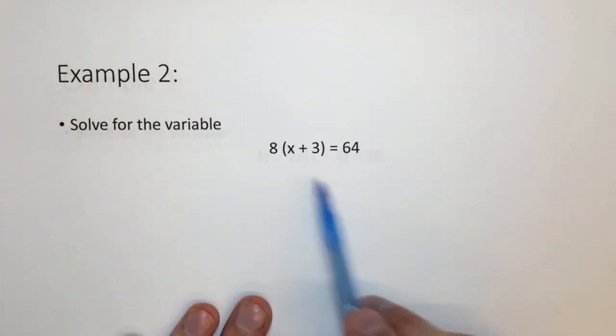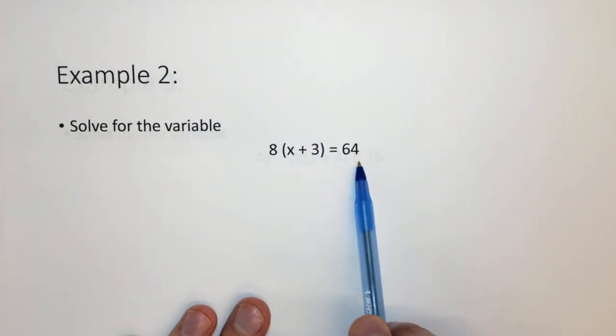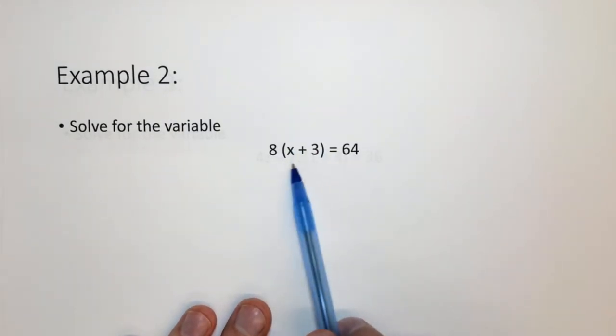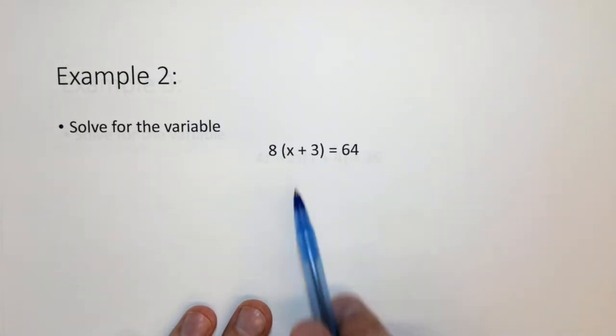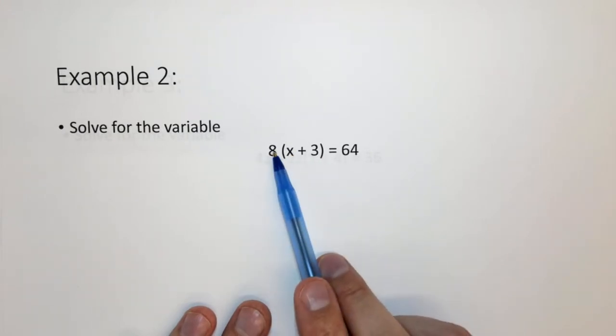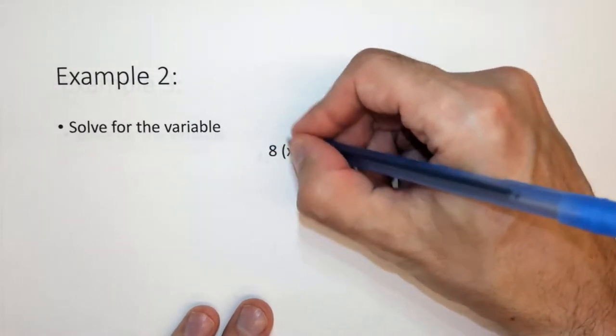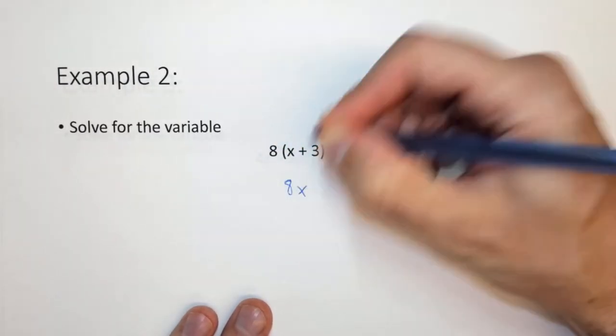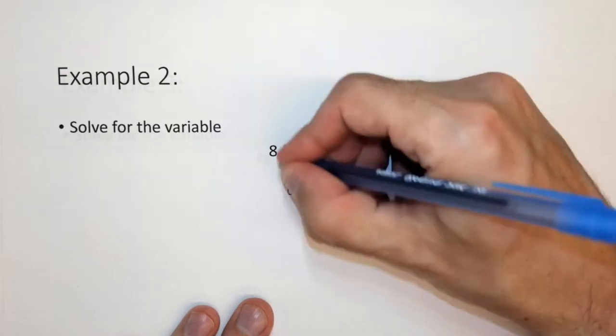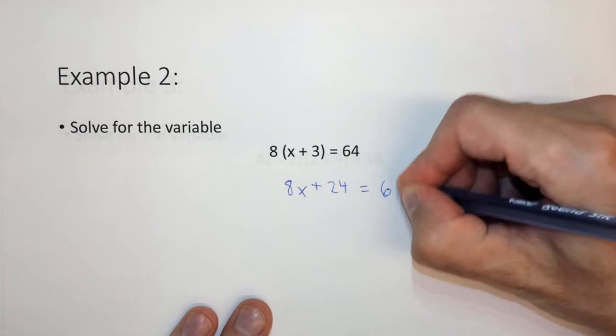Let's look at the next example. Here we have 8 times x plus 3 equals 64. In the previous order of operations section we would just add these two numbers, but in this case x is a variable, so we can't add x to 3. We need to distribute the 8 through this function. We take 8 times x, which gives us 8x, plus 8 times 3, which is 24, equals 64.